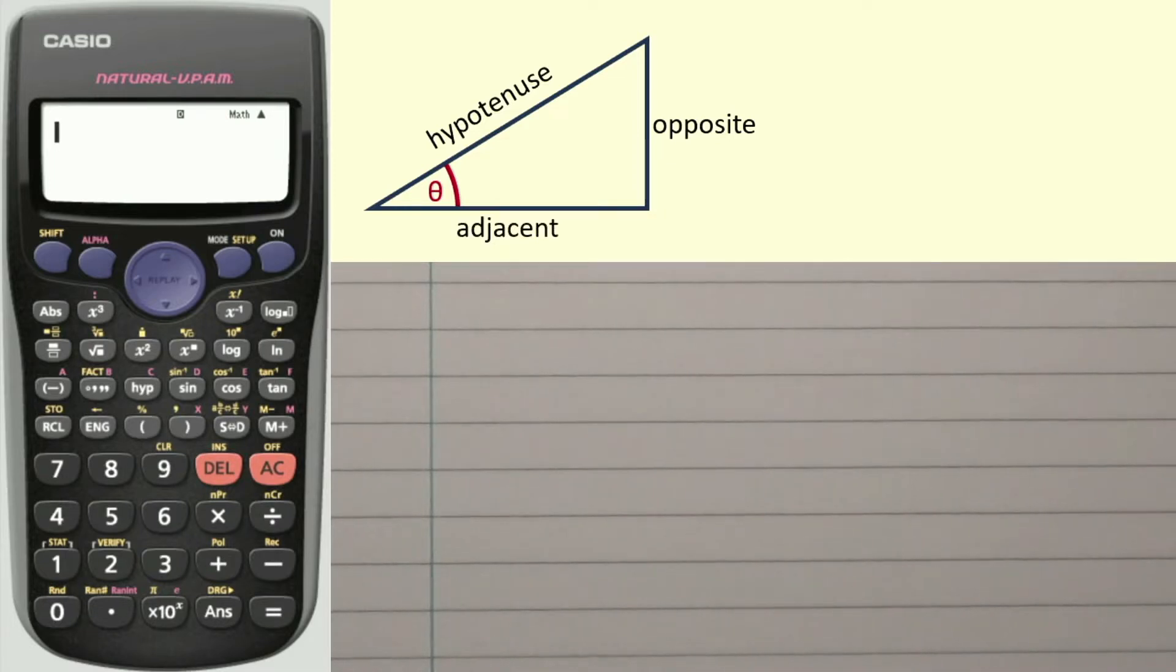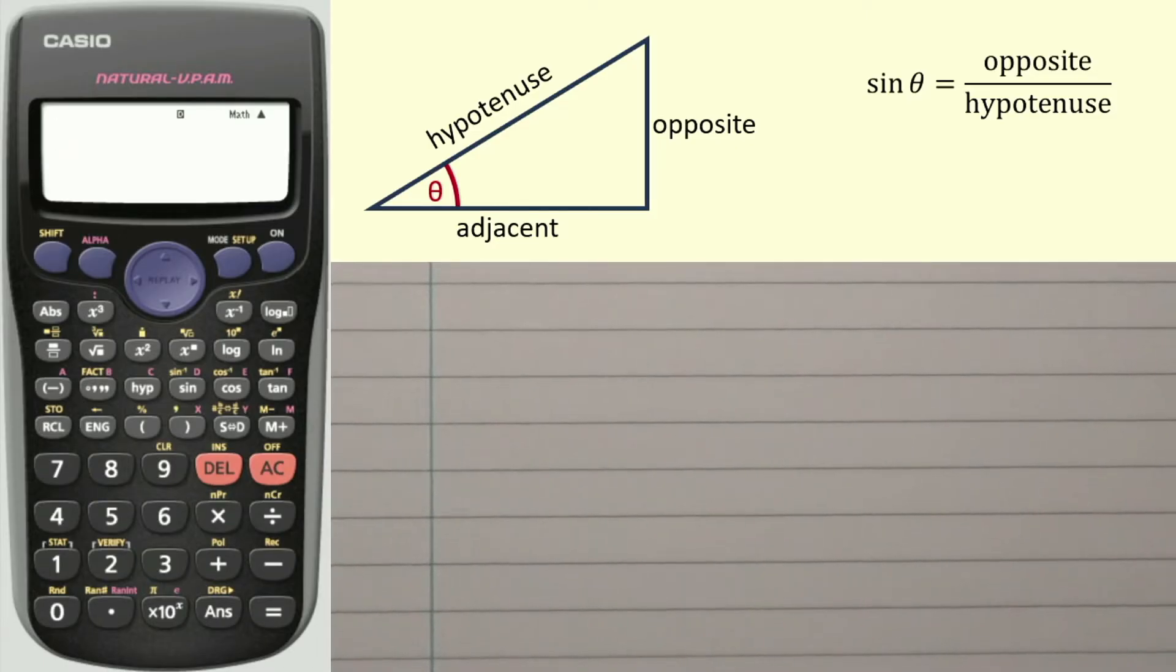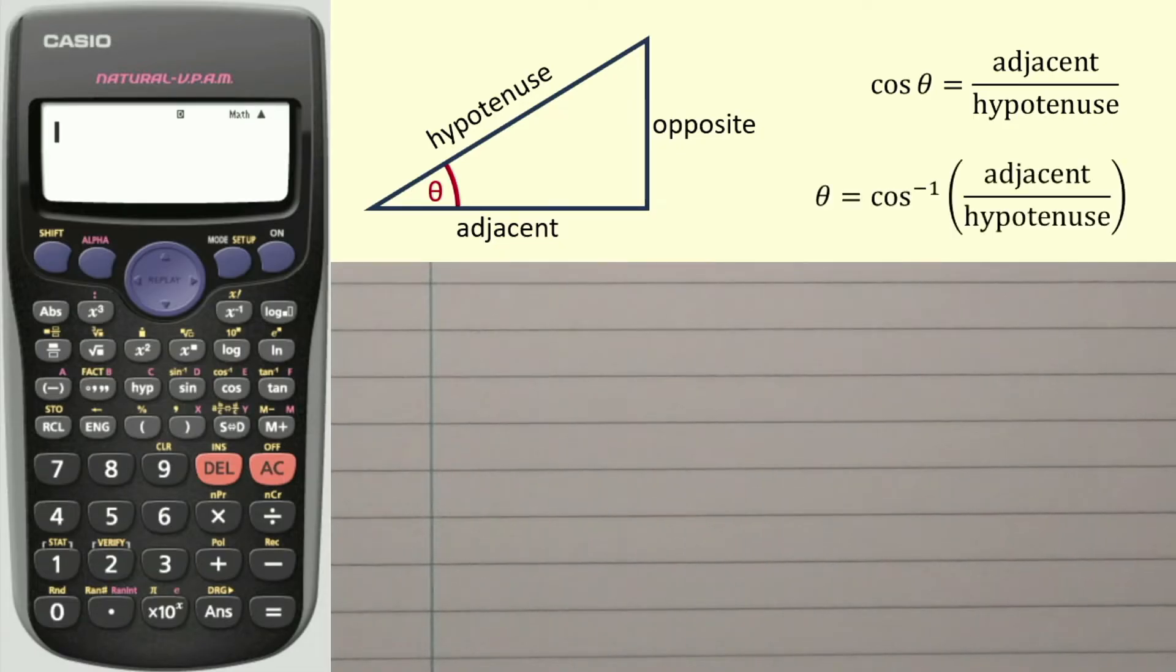To work out the angles, the sine of the angle is equal to the length of the opposite side divided by the hypotenuse. So that means that the angle theta is equal to the sine to the minus one opposite divided by hypotenuse. The second function is the cosine function. So the cosine of the angle is equal to the adjacent divided by the hypotenuse. That means that we can calculate the angle from this equation. Theta is equal to cos to the minus one adjacent divided by hypotenuse.